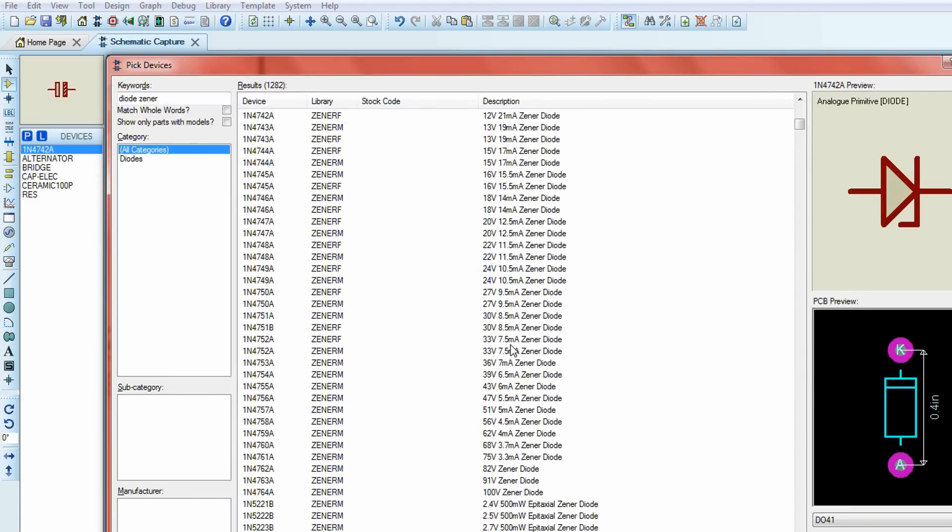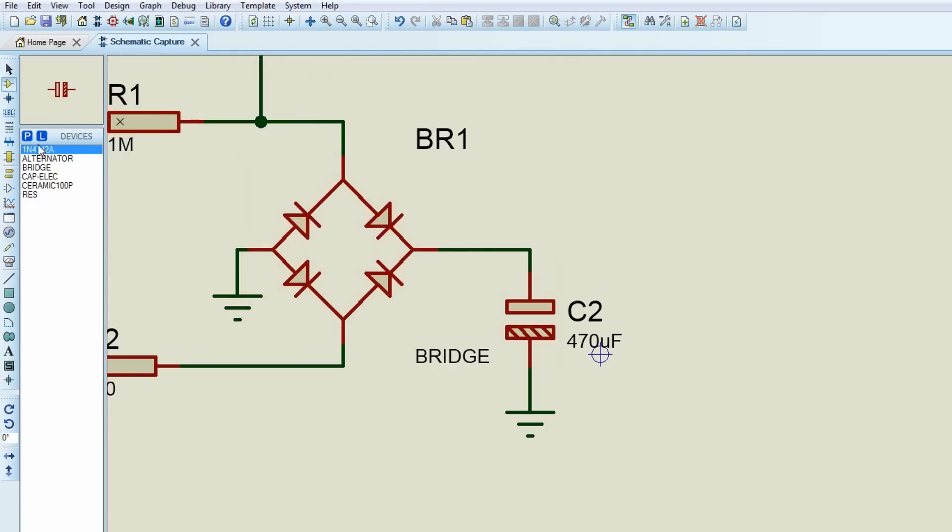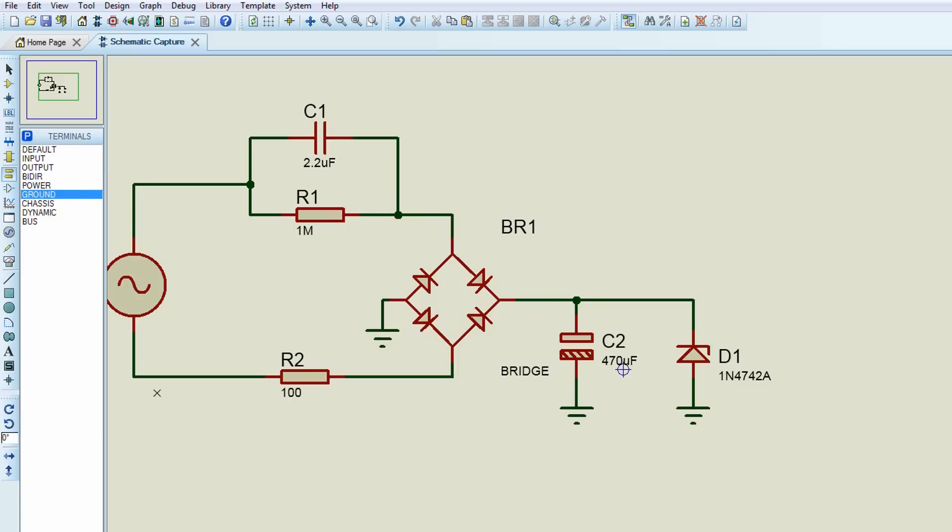And finally a zener diode of 12 volt, 1 watt is used as voltage regulator. A different value of zener diode can also be used for desired voltage like 5.1 volts, 9 volt. An LED is connected for indication.